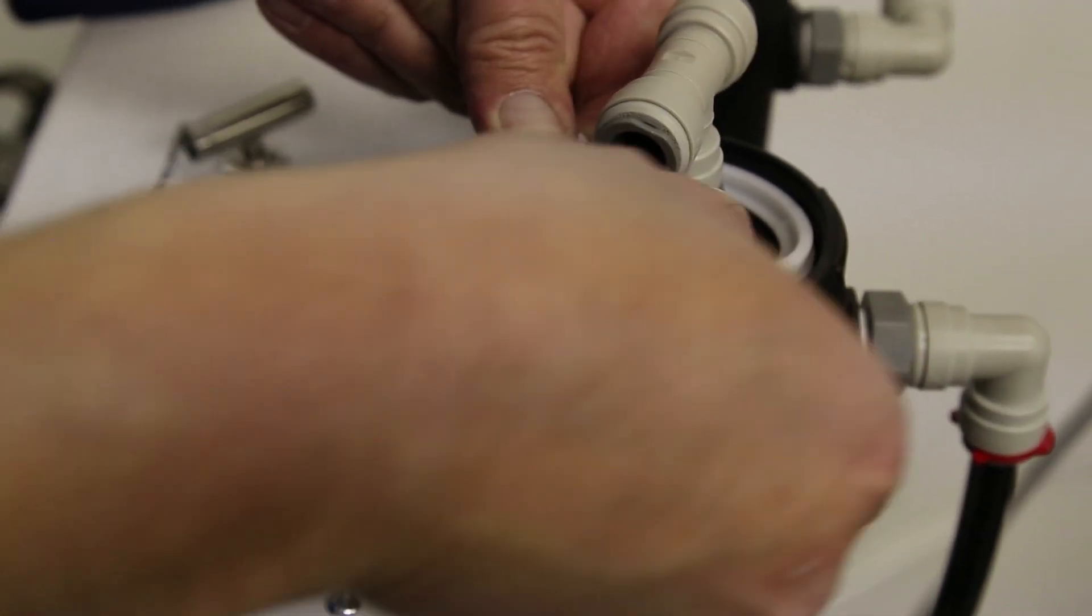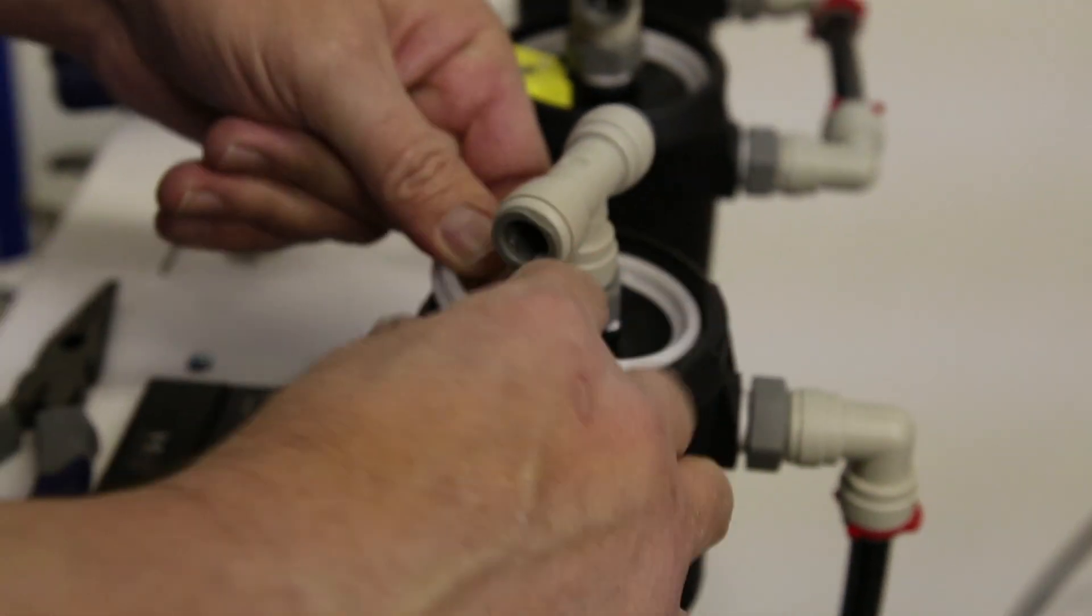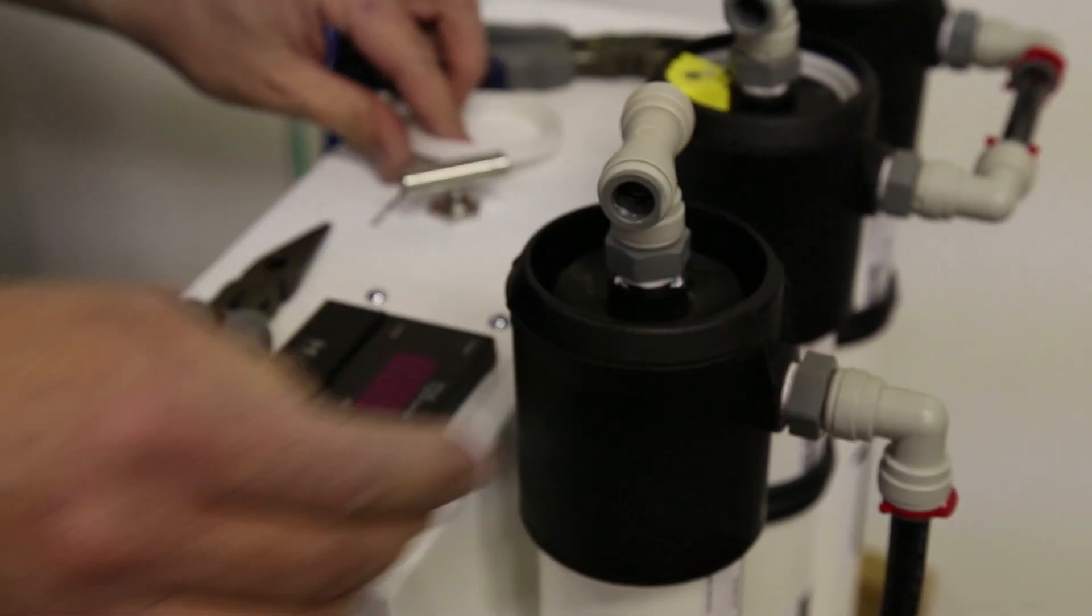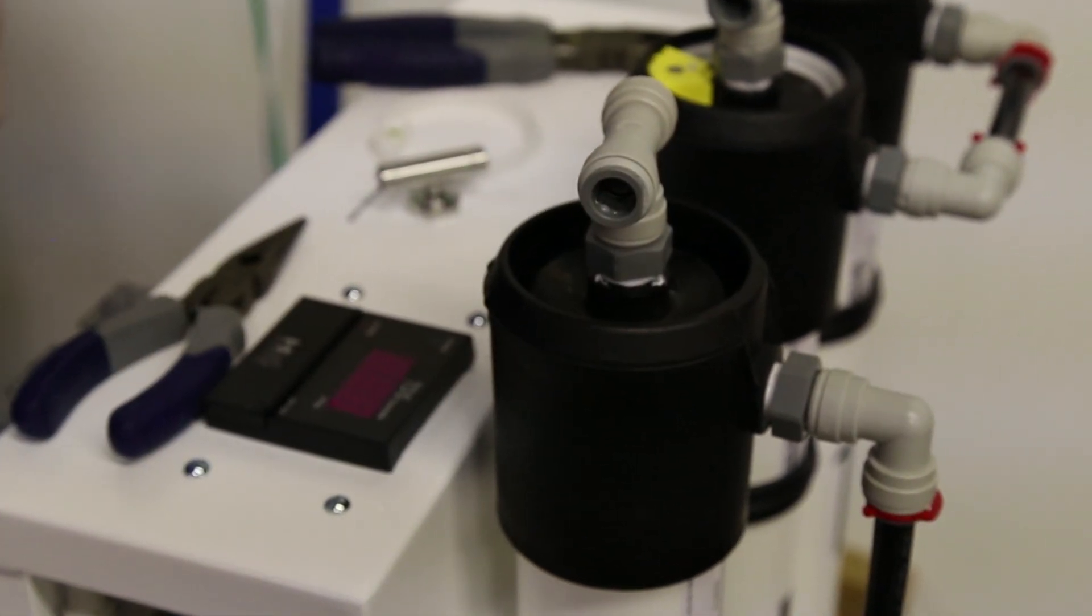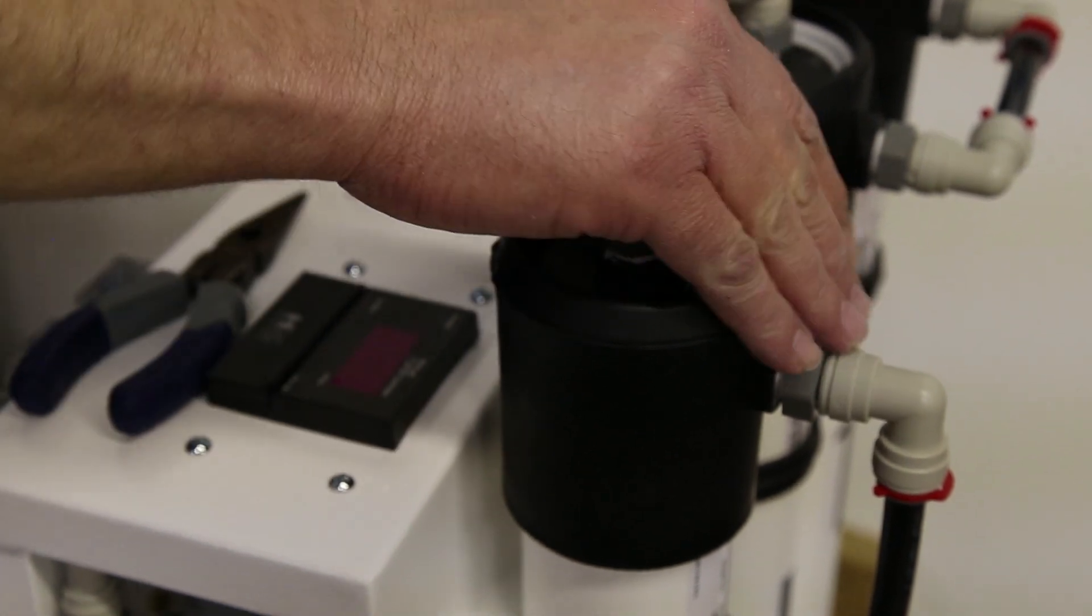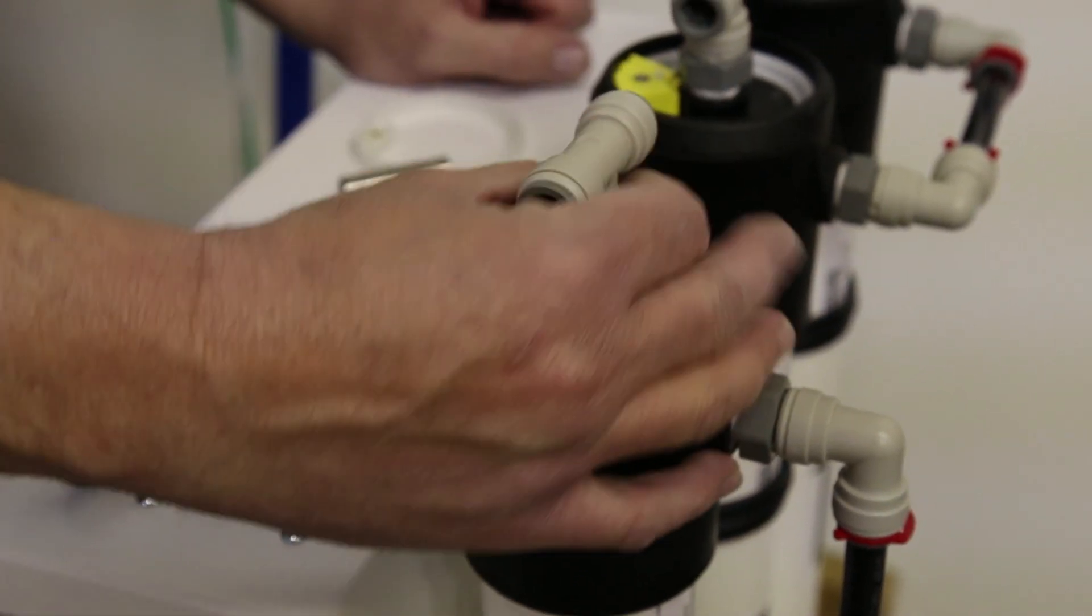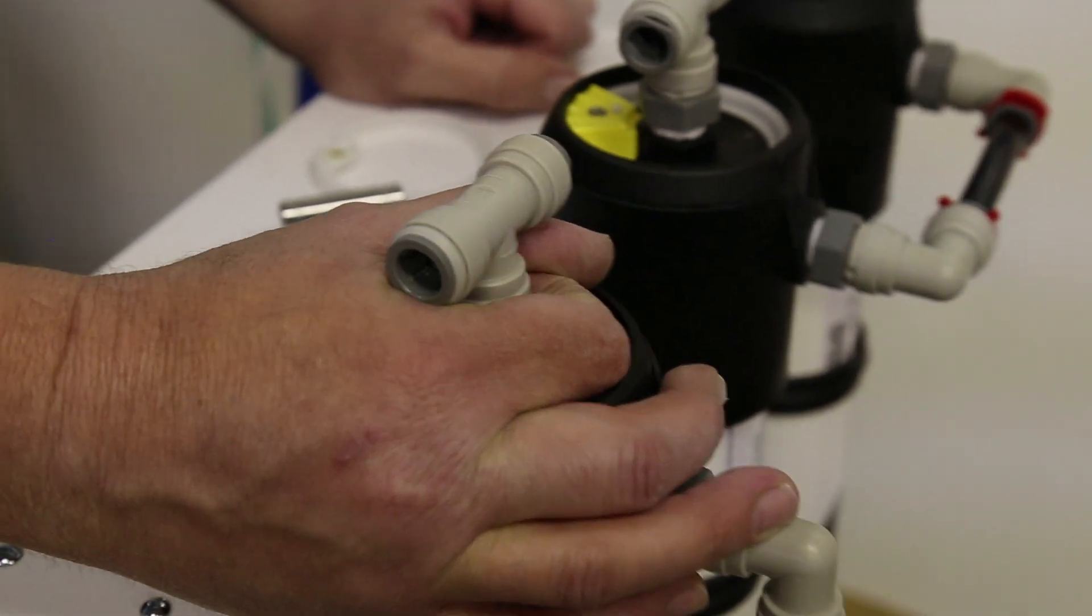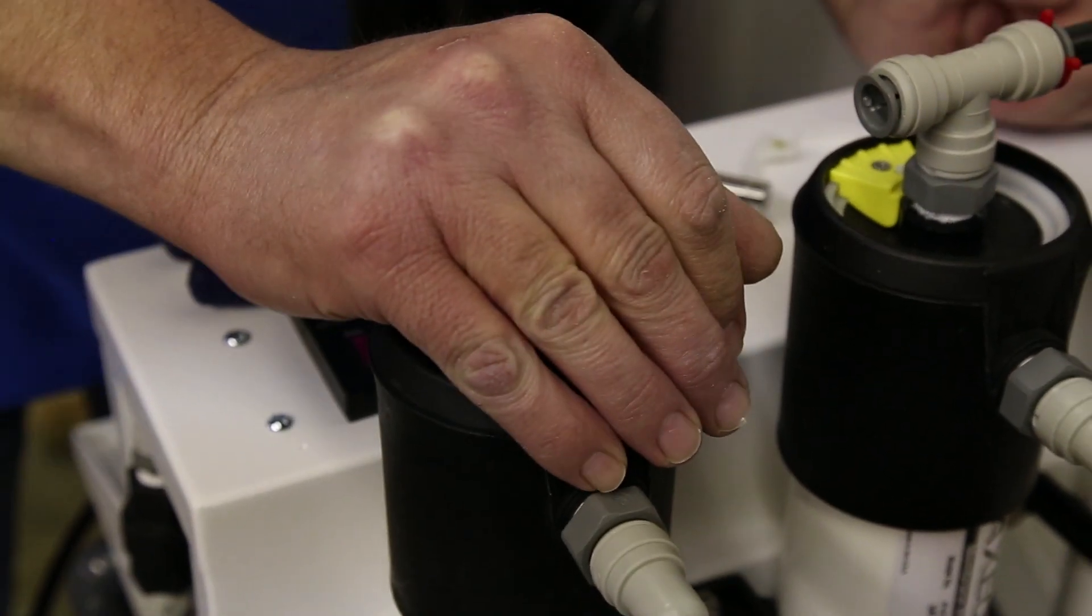Now if this is really hard to get out, check and make sure you don't have pressure on this, because there's a very good chance you may have some pressure still there. If there is pressure and you do happen to get it off, this may come out and become a projectile, so make sure the pressure is off.